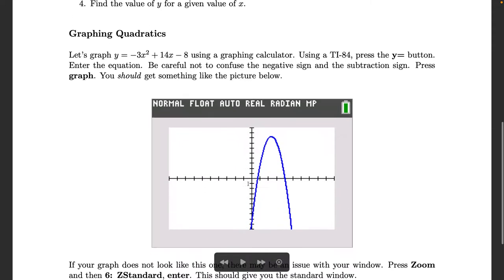Let's start with an example. So let's say we're asked to graph y equals negative 3x squared plus 14x minus 8 using our machine, and using the TI-84 these are the steps that you would follow. I'm sure you've done this before but just for the sake of completeness here they are.